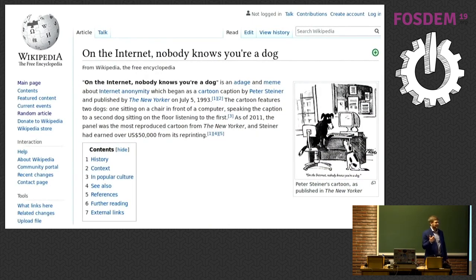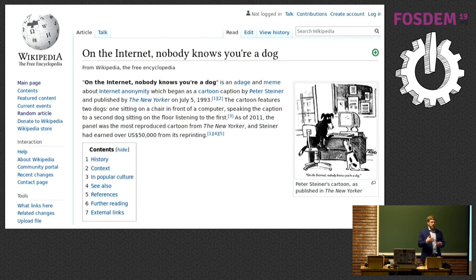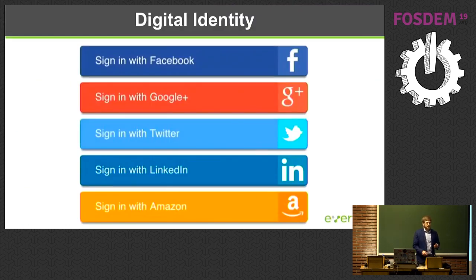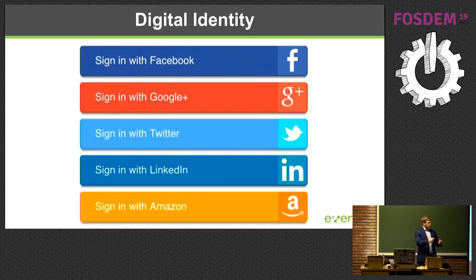Unfortunately on the internet they don't really apply. It's very hard to validate most of these things on the internet, and our relationships online can be very transitory. It's hard to know the context and situations where those symbols, those carriers of identity, are valid and where they're not. So we created alternatives, and different organizations and corporations said, we'll be your carrier of identity — use us. That works, it allows us to log into websites and do some basic things, but it doesn't have the same attributes that those offline analogs used to have.